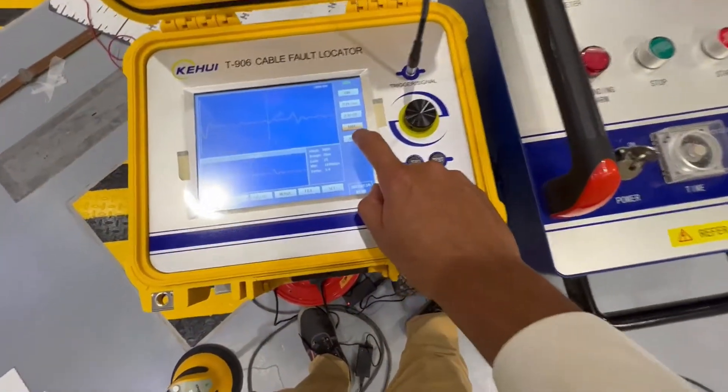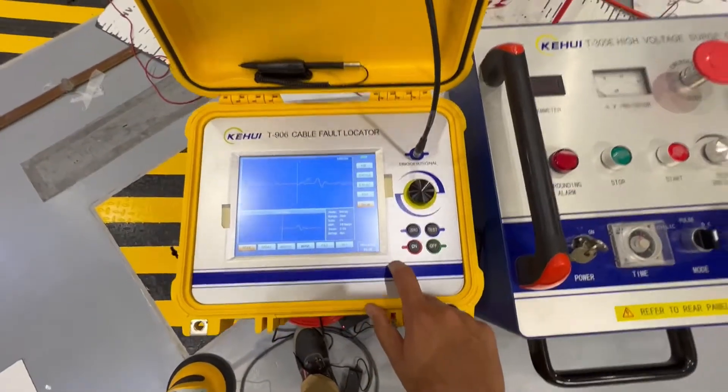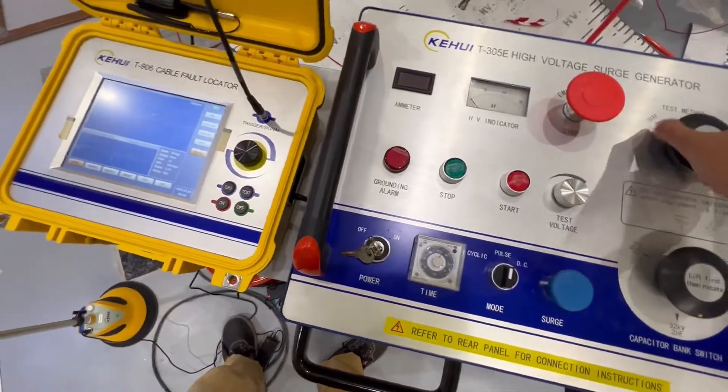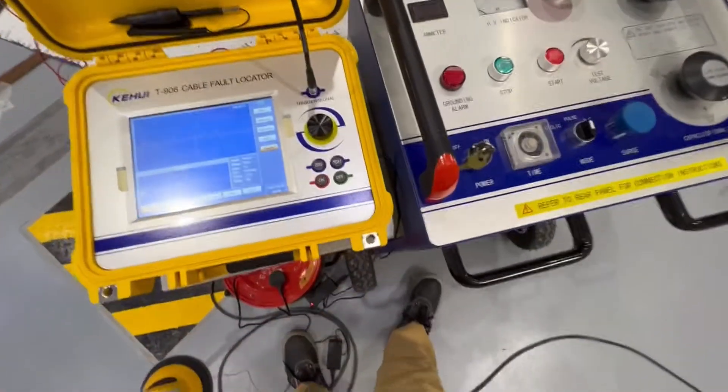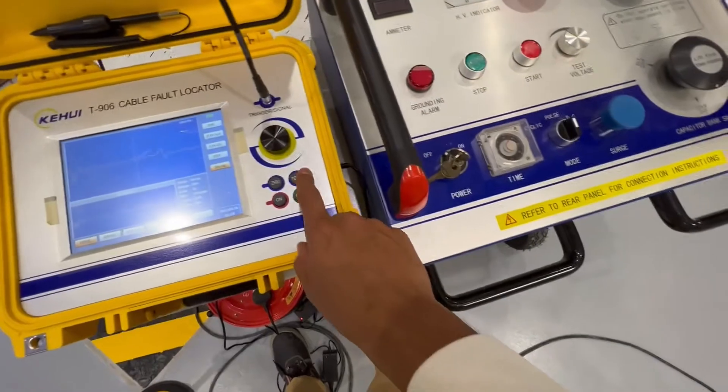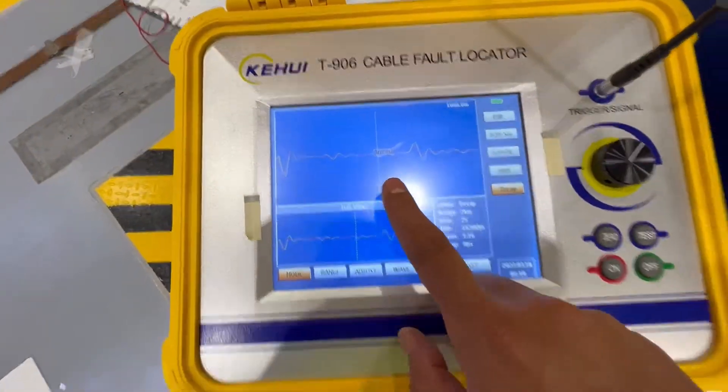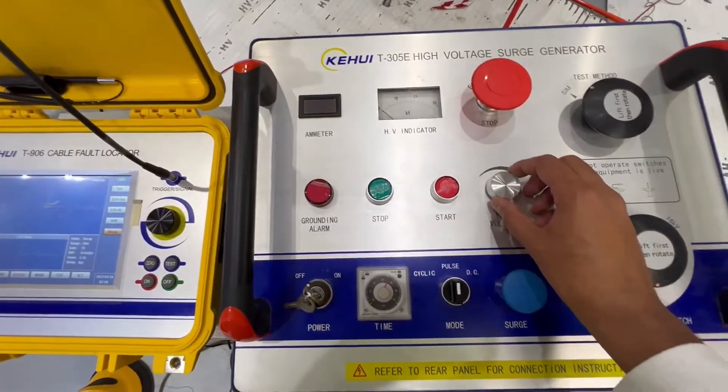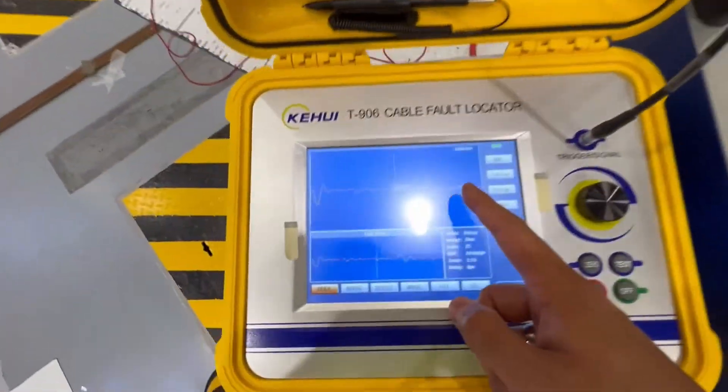This is a decay method if you want to do a DC high pot test with our fault locator. You select DK and put this mode in DC. DK method is very simple. Just select DK method, press the test button. When it is armed, slowly increase the voltage gradually until it breaks down and you get arc reflection which will tell you the distance to the fault.